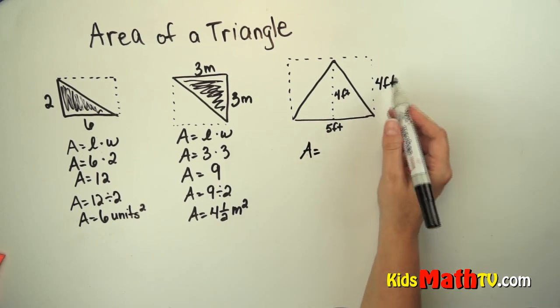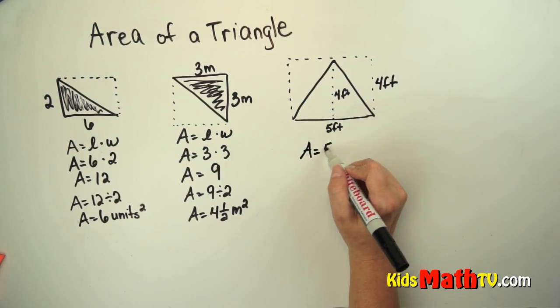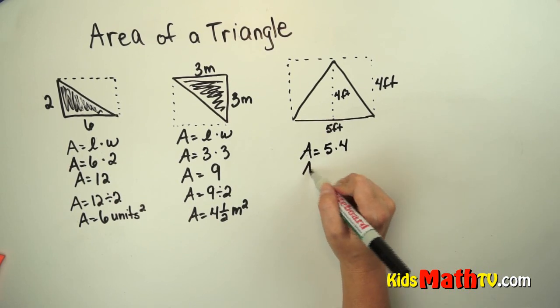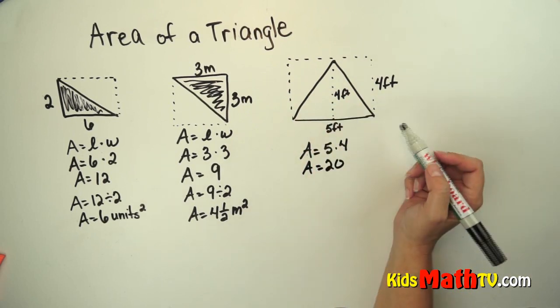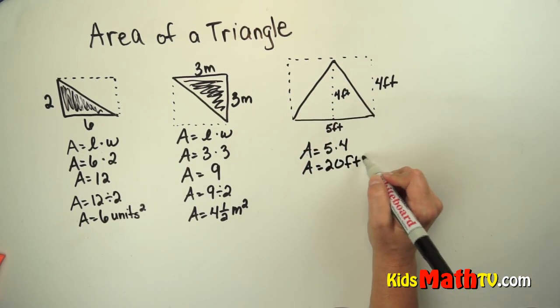So I'm going to find the area of the rectangle first. 5 times 4. 5 times 4 is 20. So this whole rectangle has an area of 20 square feet.